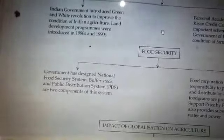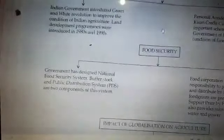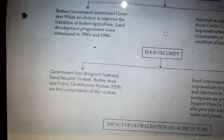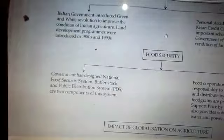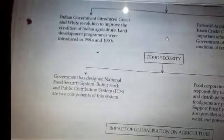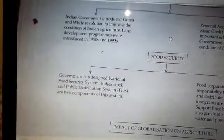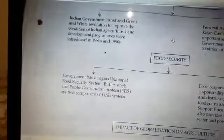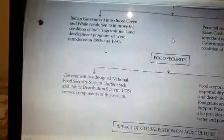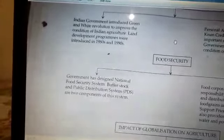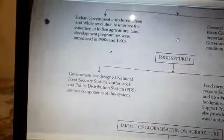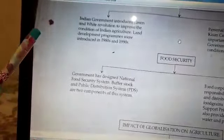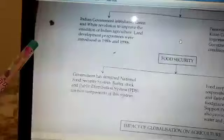The second important reform was the White Revolution, which came in 1971. It was specifically related to milk and milk production. Later on, one more reform was introduced — land development programs — in the 1980s and 1990s, to improve the condition of agriculture in India.